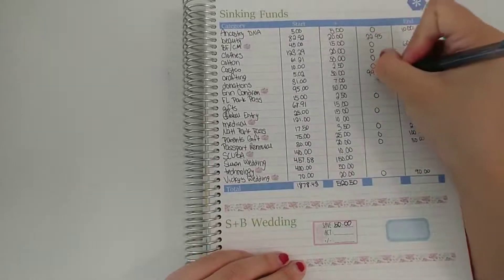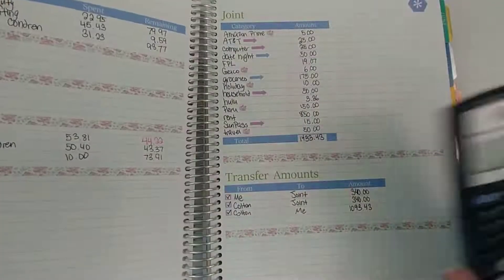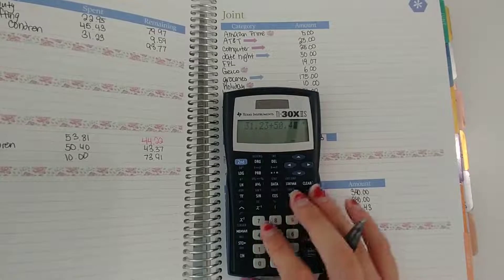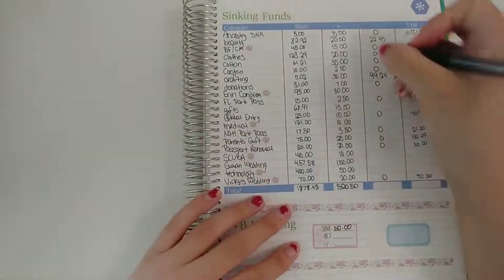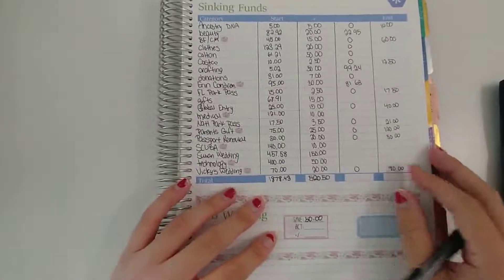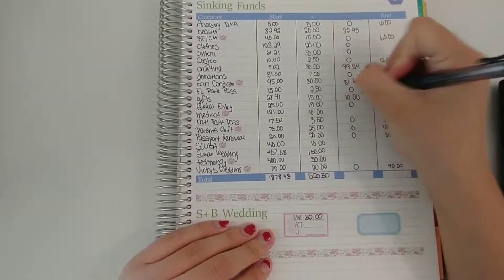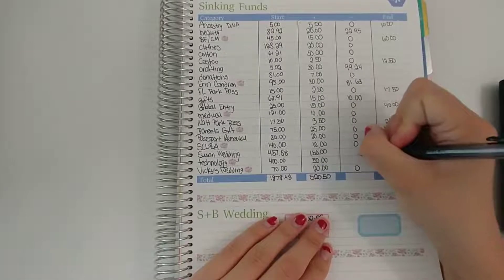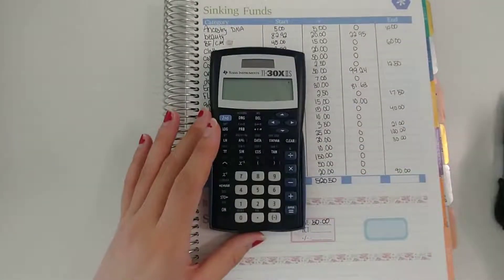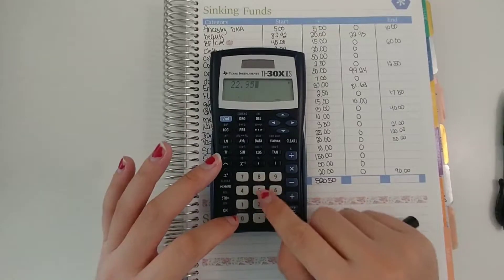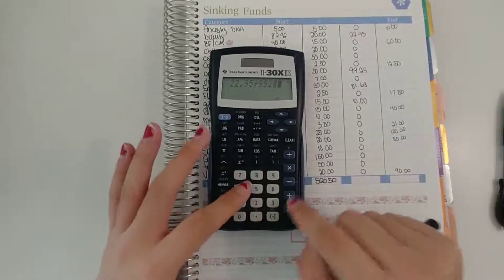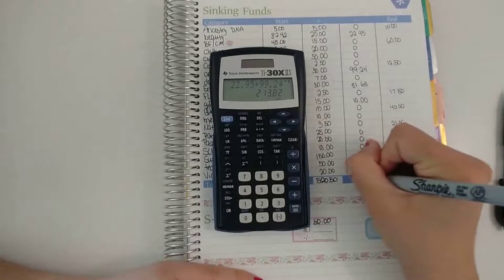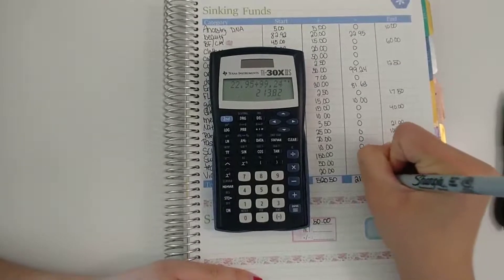Donations, I didn't donate anything. Erin Condren, $31.23, $51.63. A lot of planning related purchases this week. Gifts, just $10. Medical, nope. Zuba, wedding, technology, okay. So let's add up all my spent. So $22.95 plus $99.24 plus $81 plus $10. So in total this month I spent $213.82.